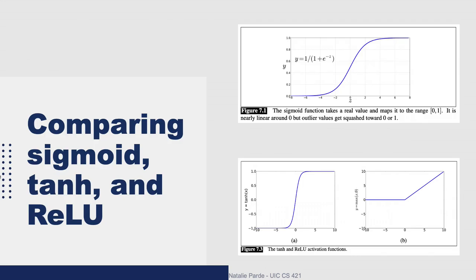So now we've looked at three common activation functions, and the course textbook provides these nice graphs to plot them out and show how each activation function differs. It's pretty normal to try out multiple activation functions as you develop your neural network and see what works best for your specific task. This is just one of many possible hyperparameters that you can tune.